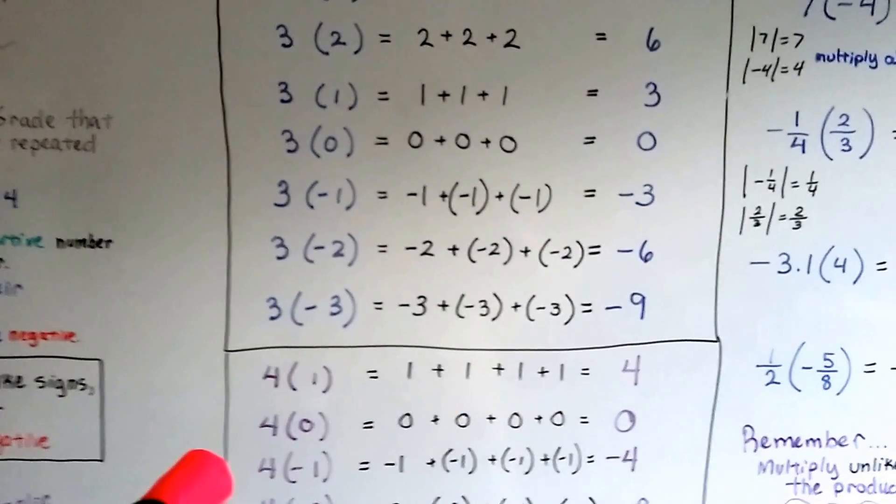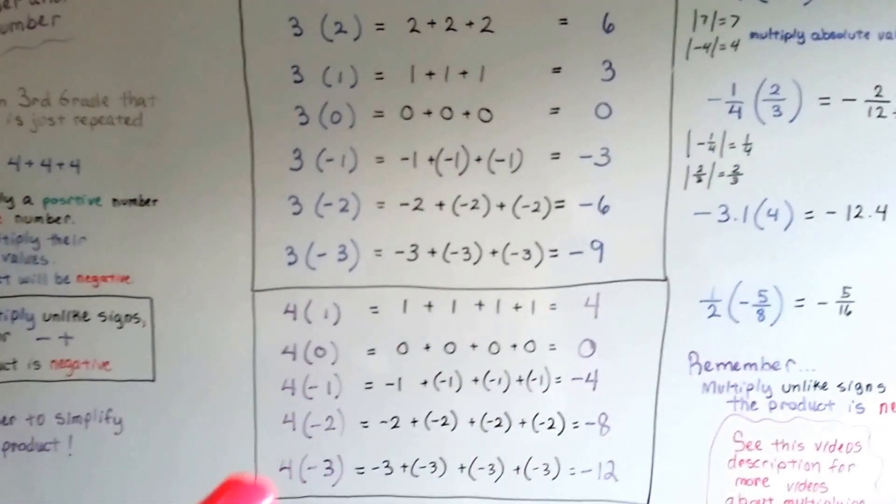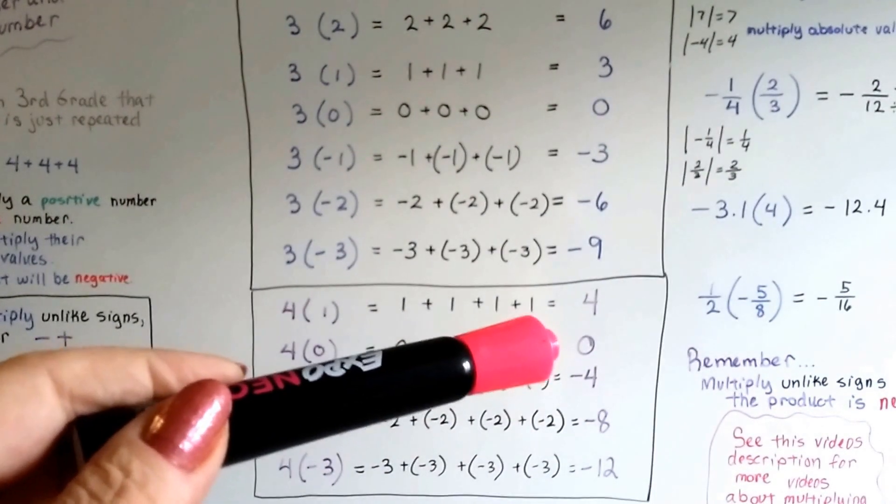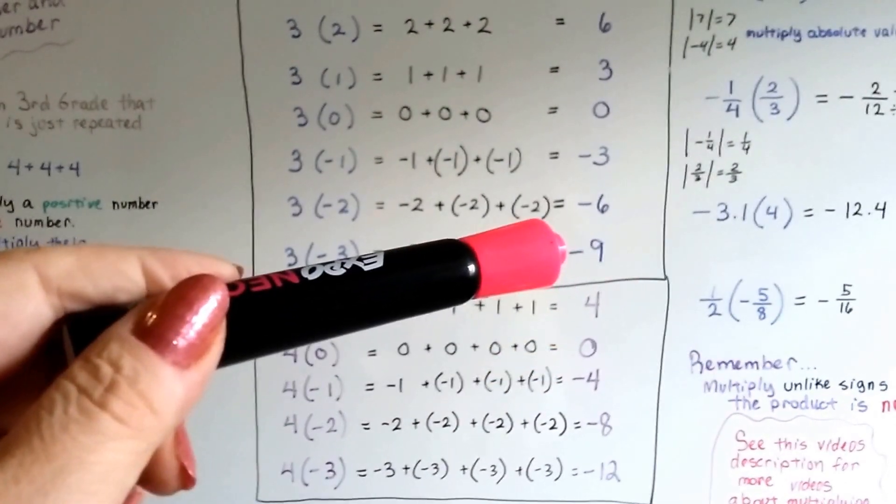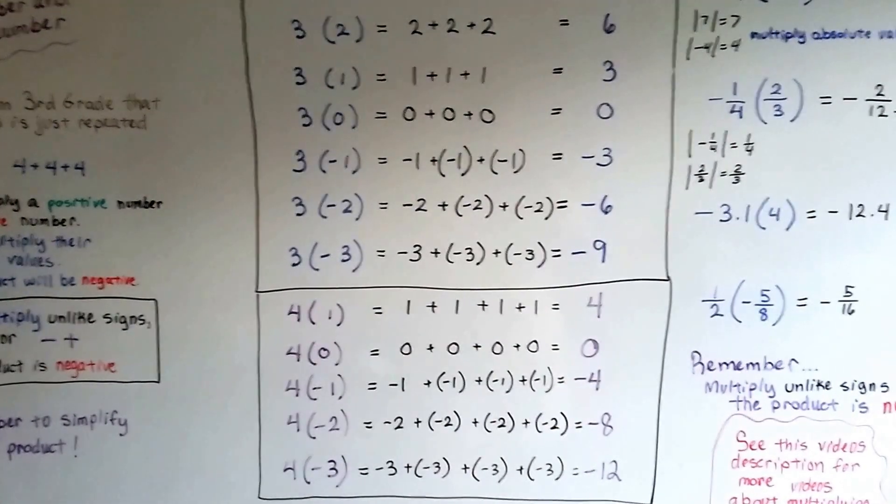And same thing if we used 4. 4 times 1, 4 times 0, 4 times negative 1, negative 2, negative 3. The 0 is the center, and as we go up, it goes into the positives, and as we go down, it goes into the negatives, and it skip counts by 4s.